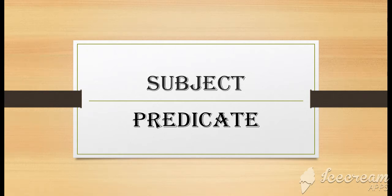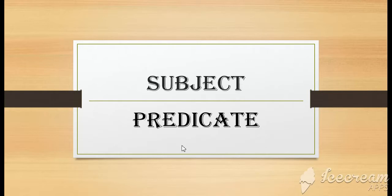Hello students, this is our first chapter: the sentence. In this chapter there are two parts of a sentence. The first is subject and the second part is predicate. Now before going further, I will explain the definition of subject and predicate.